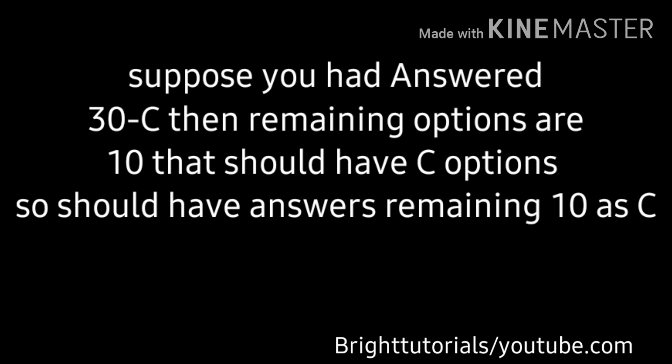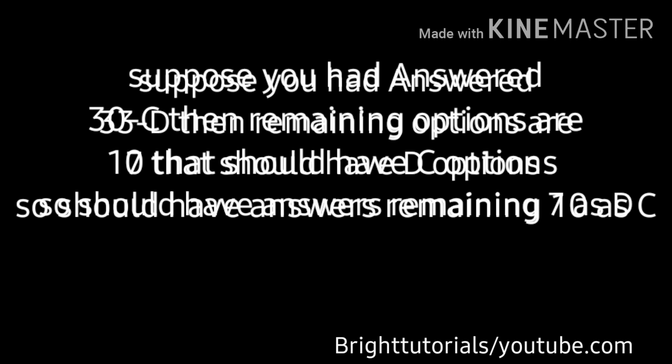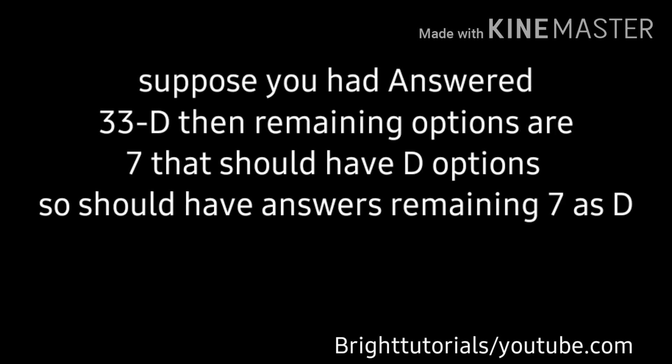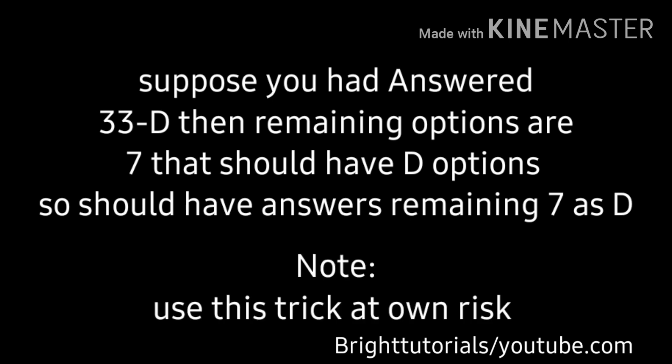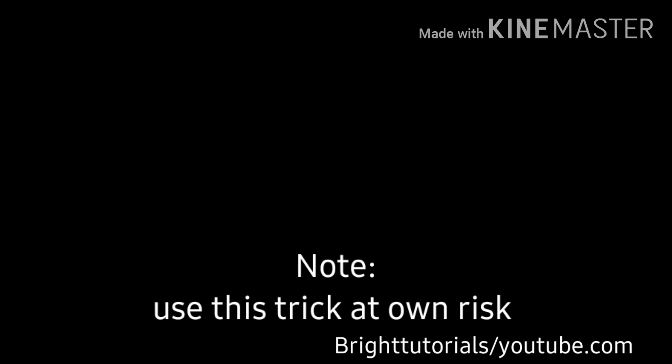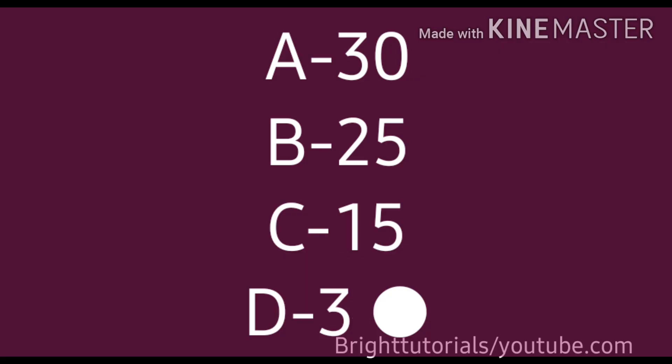By using this guessing trick, you should answer those remaining 10 questions as option C. Suppose you have answered 33 questions as answer D — the remaining 7 questions that should have answer D means you should answer those remaining 7 questions as answer D.